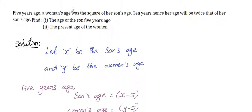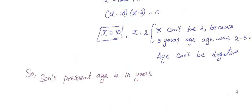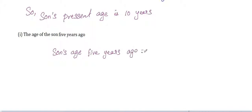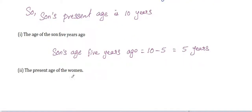We need to find the son's age 5 years ago. Since the son's present age is 10, his age 5 years ago was 10 minus 5, which is 5 years.